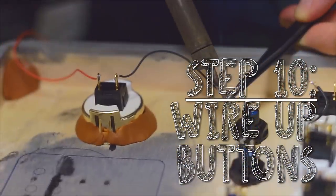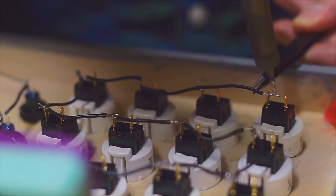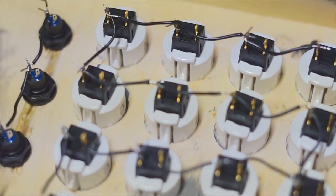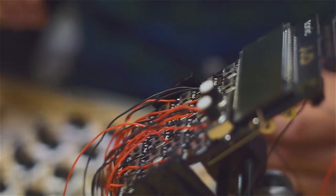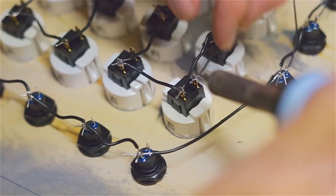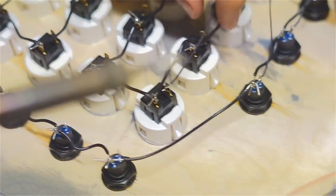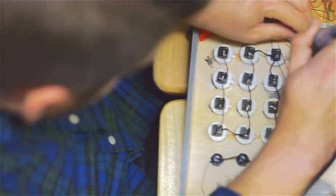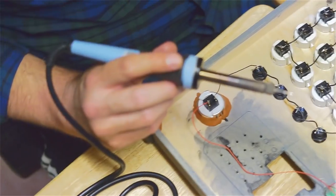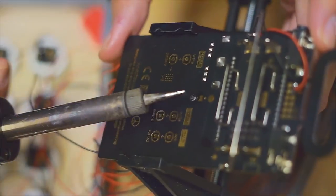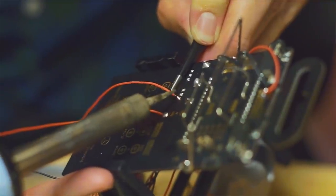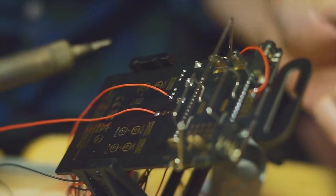Now we'll solder the ground line of all of the buttons, we'll daisy chain them from one to the next. Then we'll connect that ground line to the beat repeat 30mm arcade button and run that line which is also attached to the ground of the pocket operator. Next, we'll take the signal button from each pocket operator button and solder it to a corresponding arcade button. For the beat repeat function, one wire of the 30mm arcade button will go to the ground while the other will go to the negative of the speaker output pin on the back of the pocket operator.